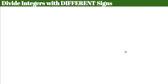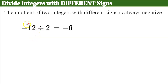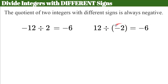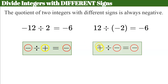Now let's talk about dividing integers with different signs. The quotient of two integers with different signs is always negative — again, a connection to multiplying. Multiplying and dividing integers with different signs: your product or quotient will always be negative. A negative divided by a positive gives a negative quotient. A positive divided by a negative gives a negative quotient. Two different signs, negative quotient.